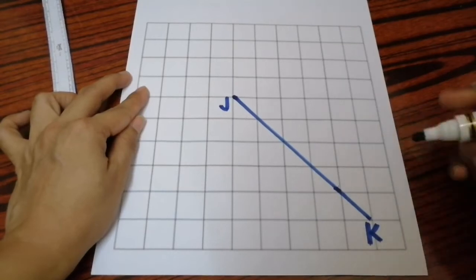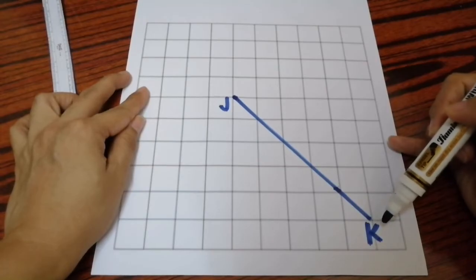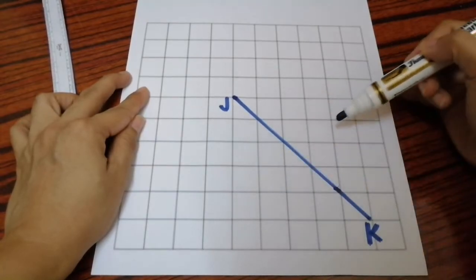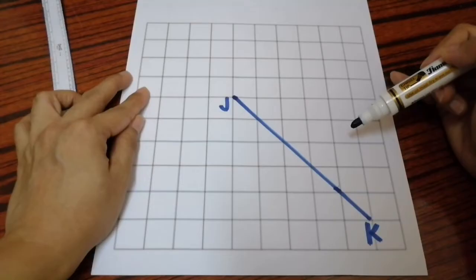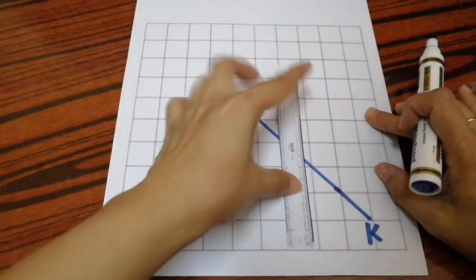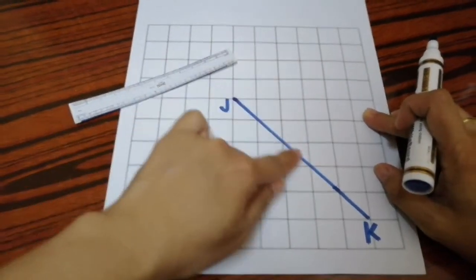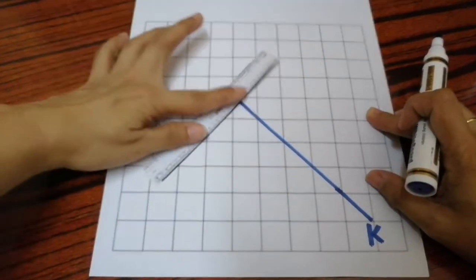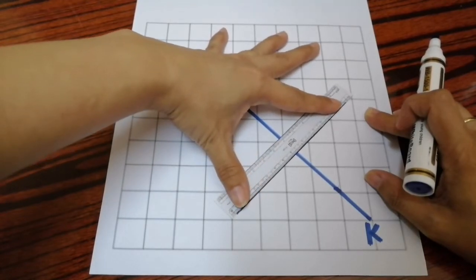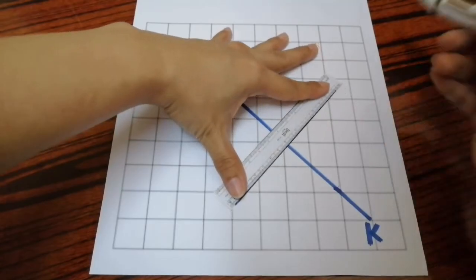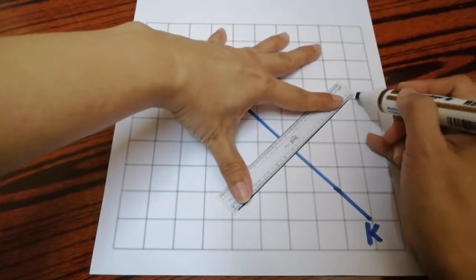We have another example. We have line JK, and this time we are going to create a line perpendicular to JK. You must remember that we need to create a 90-degree angle. If you draw like this, you won't be able to create a 90-degree angle, but if you follow the diagonal of the squares in each grid and follow the points, you will be able to create a straight line.